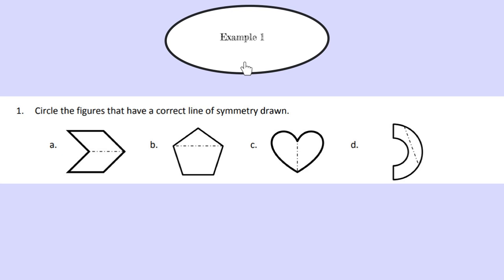Now that we have gone over our vocabulary, we can start on example one. We're always going to start with the directions, and they read: circle the figures that have a correct line of symmetry drawn. So remembering from our vocabulary, a line of symmetry is the real or imaginary line that splits the figure in half so the figure can fold onto each other and create a mirror image. Here is our line of symmetry, and if we were to fold this part onto this part, they would match exactly. Therefore, this is a correct line of symmetry, so we're going to circle part A.